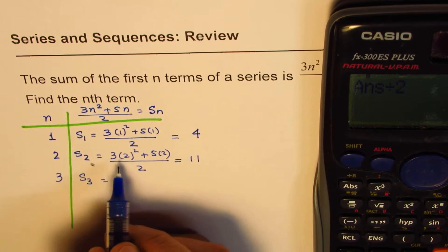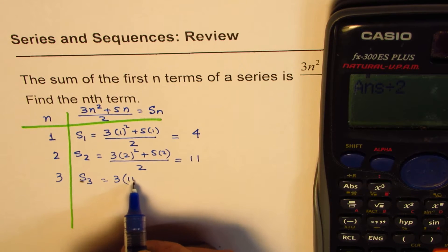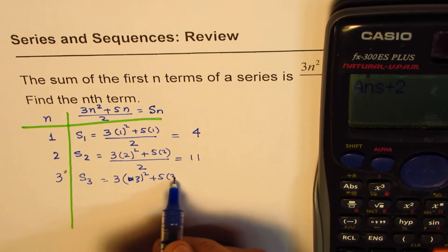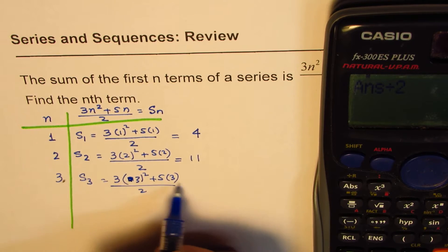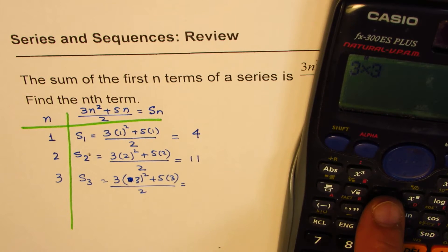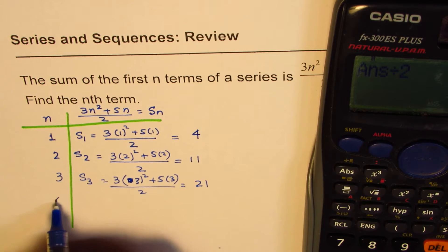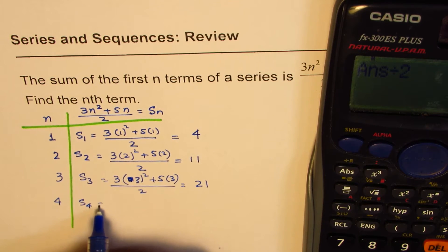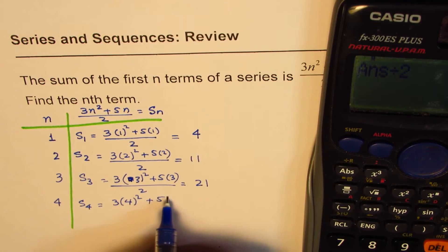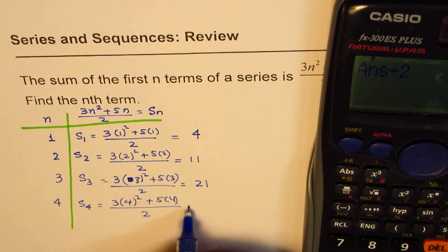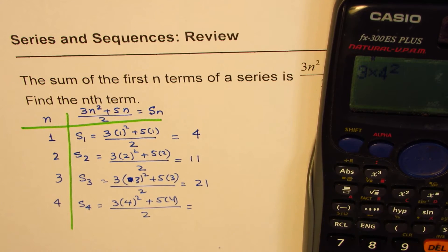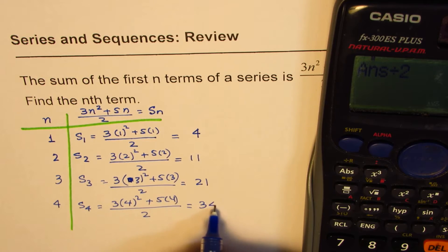The sum of 3 terms: we replace n with 3, giving 3 times 3 squared plus 5 times 3, divided by 2. That equals 21. We can also calculate the sum of 4 terms: 3 times 4 squared plus 5 times 4, divided by 2, which equals 34.